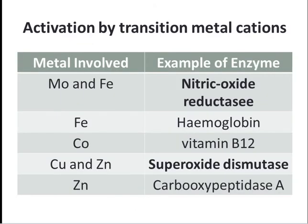Transition metal cations are also involved in enzyme activation. These metals include copper, zinc, manganese, iron, and cobalt. Transition metal ions bind to enzymes much more strongly than the previously discussed metal ions and usually form metalloenzymes, making their involvement in catalysis relatively easy to investigate. They are found only in trace amounts in living organisms; larger amounts can be toxic. For example, the trace metals molybdenum and iron are found in nitrogenase, the nitrogen-activating complex of nitrogen-fixing bacteria. Iron is a component of hemoglobin. Cobalt is found in vitamin B12. Superoxide dismutase contains copper and zinc, whereas carboxypeptidase A possesses only zinc.